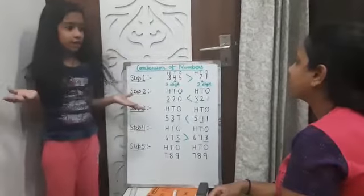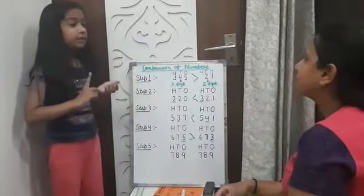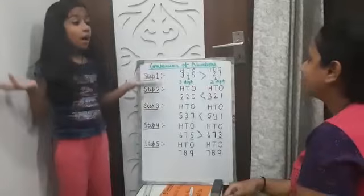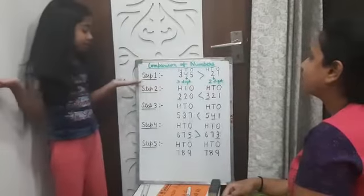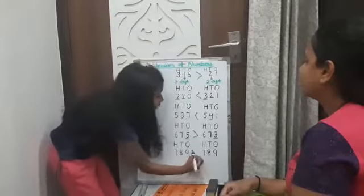Step five: If hundreds, tens, and ones are all the same, the numbers are equal.